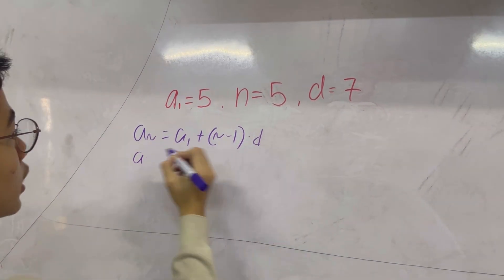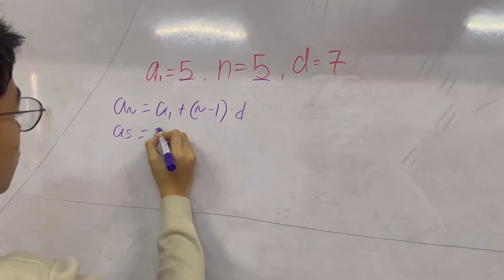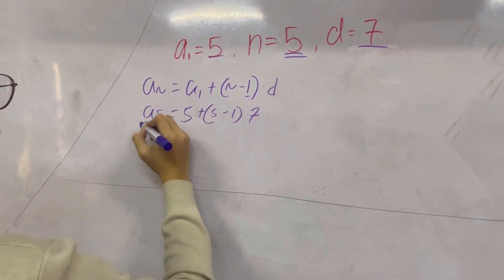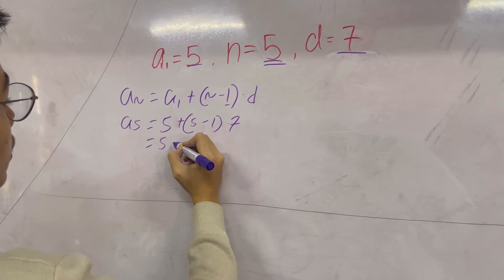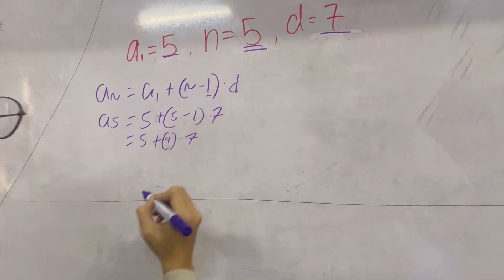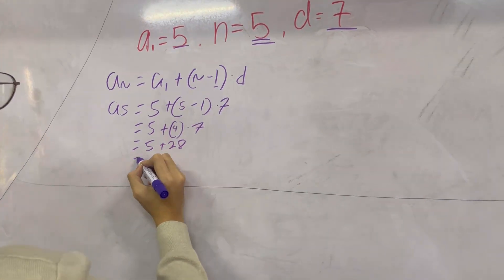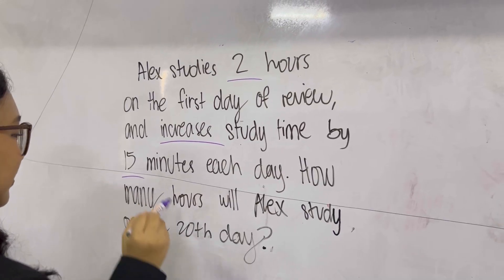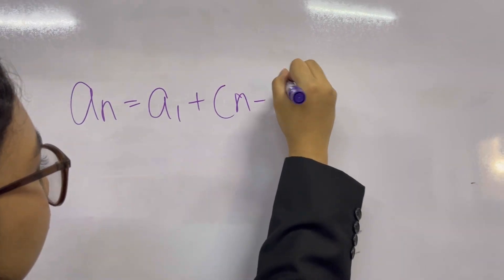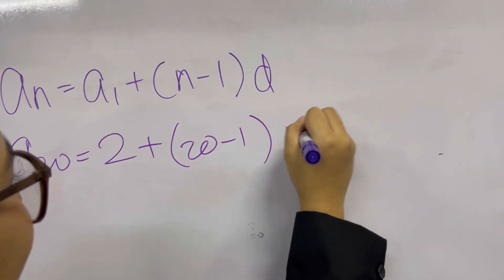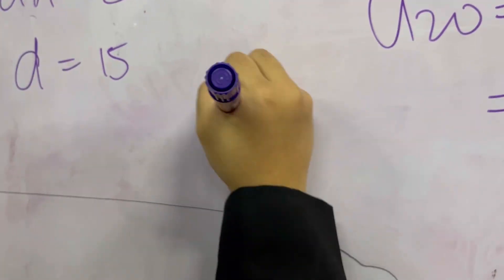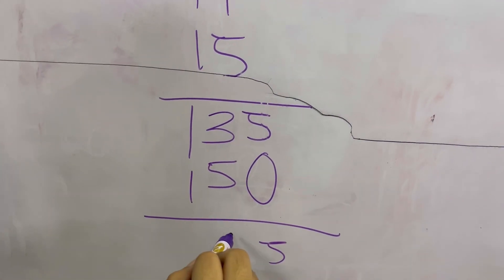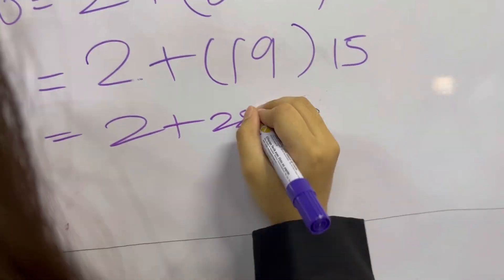First, we have to apply the formula as shown. Our n is 5, A sub 1 is also 5, and our common difference is 7. We multiply (5 minus 1) times 7, which equals 28, then add the 5, and the total comes to 33. For a word problem, underline all the key points, write the general formula, replace the variables with the key values, subtract what's in the parenthesis, multiply by the common difference, and then add A sub 1 to get the final answer.